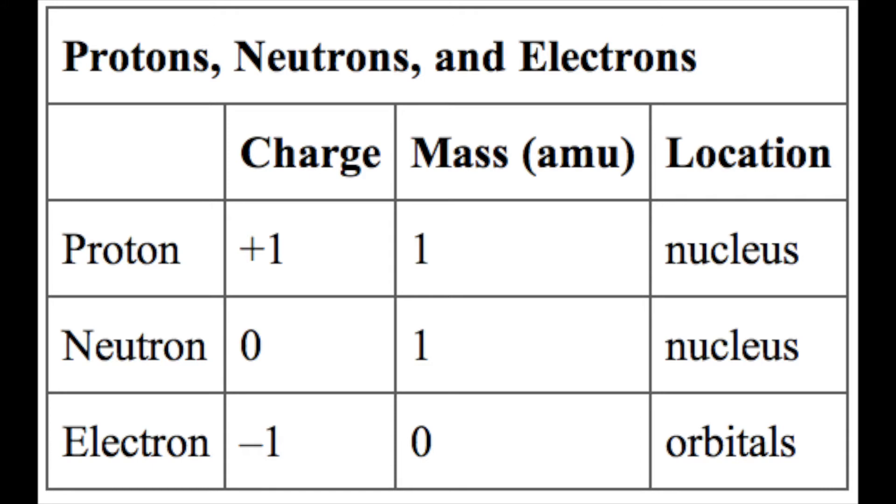Electrons are much smaller in mass than protons, weighing only 9.11 times 10 to the negative 28th grams, or about 1 out of 1,800 of the atomic mass unit. Therefore, they do not contribute much to the element's overall atomic mass.